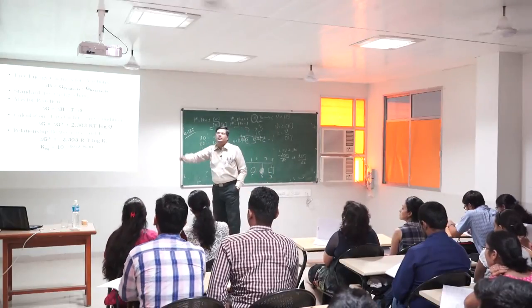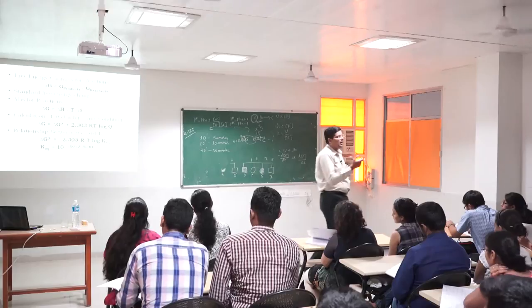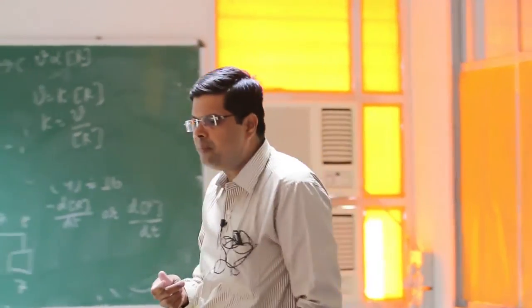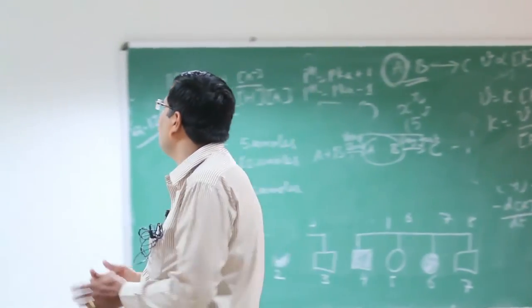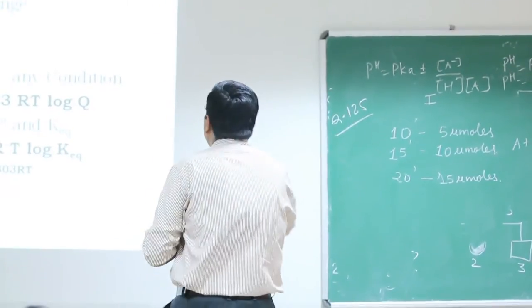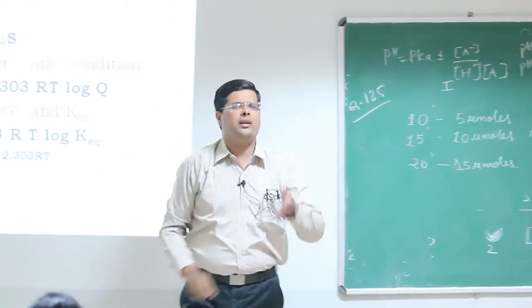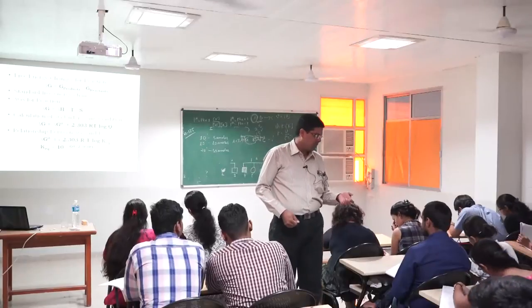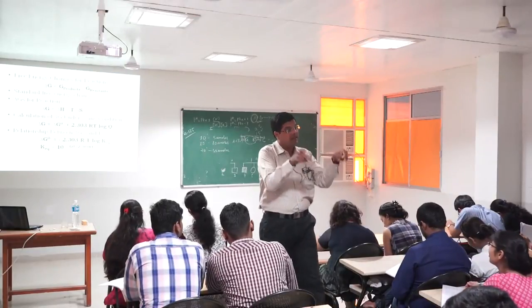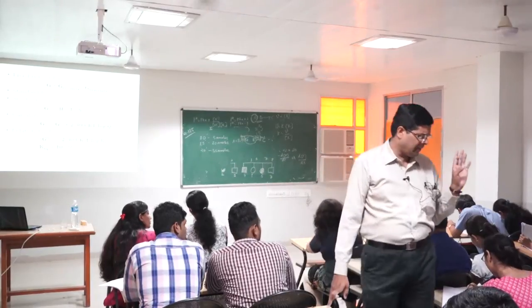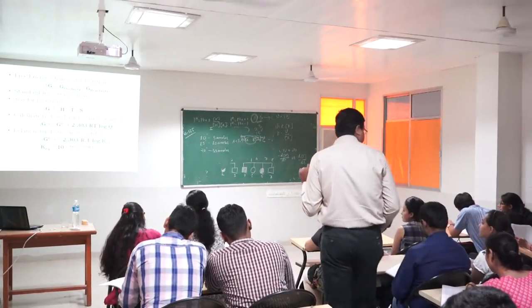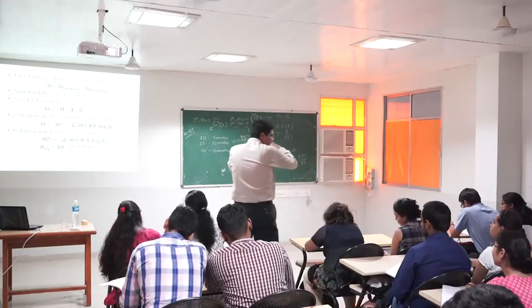What is the relationship between enthalpy and entropy? The enthalpy is the total amount of heat which the system possesses. The difference in heat between the system and the external environment is symbolized by delta H. Delta G is the free energy and delta S is the difference in entropy between the system and the external environment.